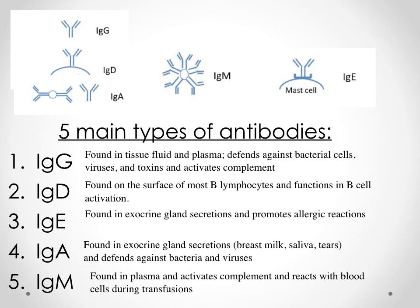IgE is found in exocrine secretions and gets released from mast cells during allergic reactions. One of the principal products of IgE-triggered mast cells is histamine. However, IgE can also trigger additional histamine release from mast cells due to binding of the mast cell to a known or even unknown antigen. IgA is either a monomer or a dimer of immunoglobulins, found in secretions — particularly exocrine secretions such as saliva, tears, and for females, breast milk. This is the first form of passive immunity that we receive through suckling, which we'll discuss when we get to immunocompetence.